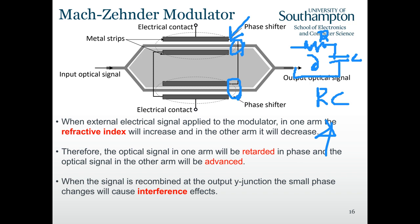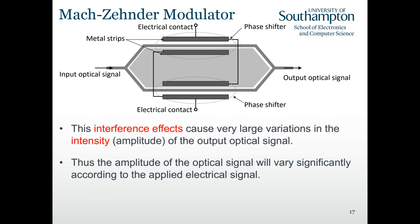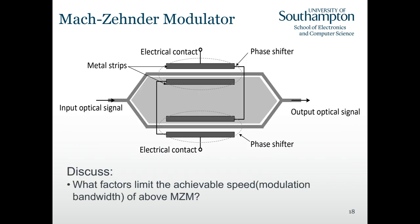By changing the refractive index in one arm via an applied electric field, we change the propagation constant. When the two coherent waves recombine, they interfere constructively or destructively to represent signal level 1 or signal level 0.